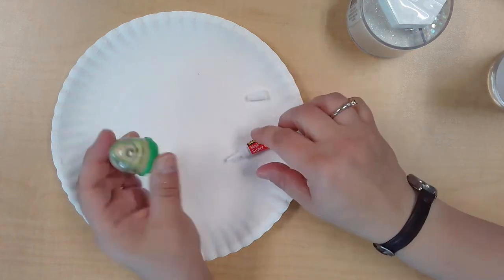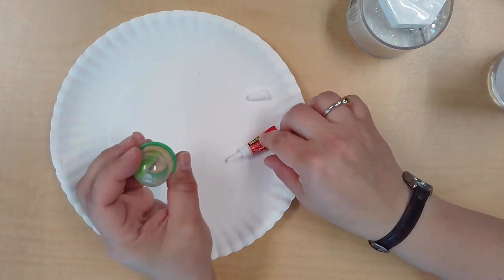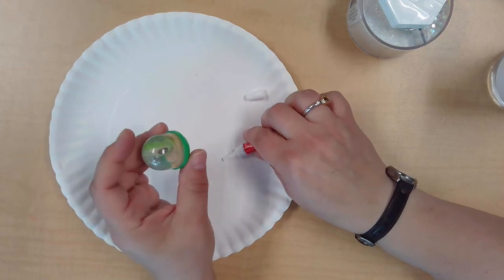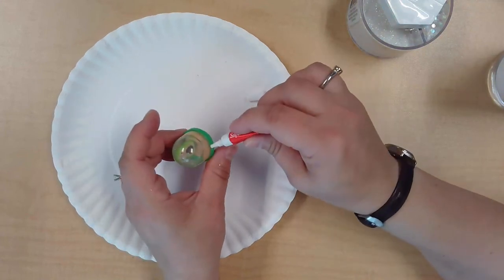If you want to be super careful about leaks, you can run some more super glue along the base where it meets after it's set.